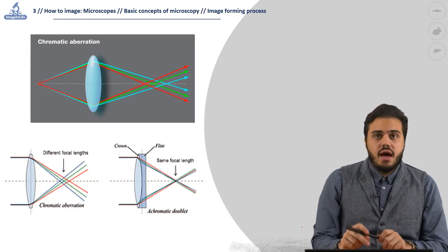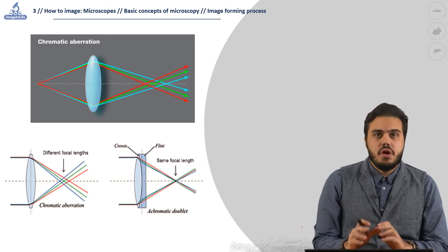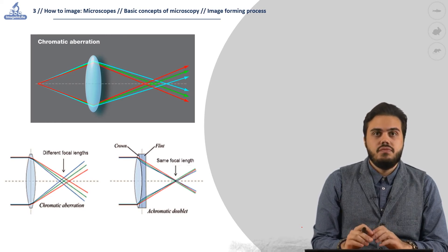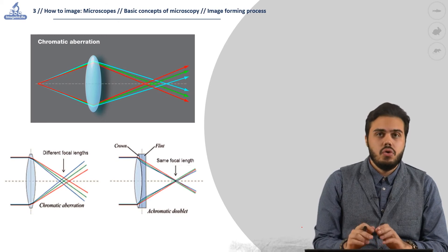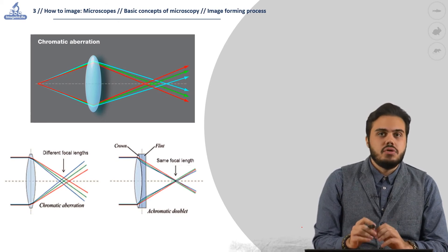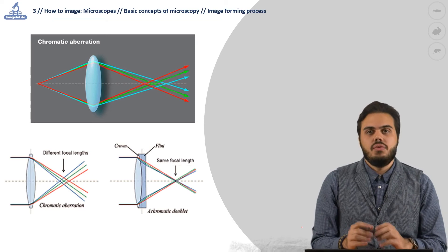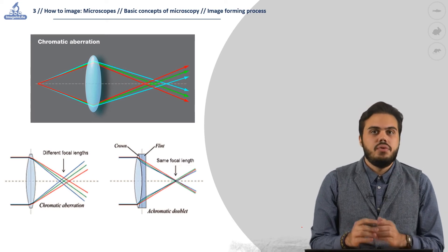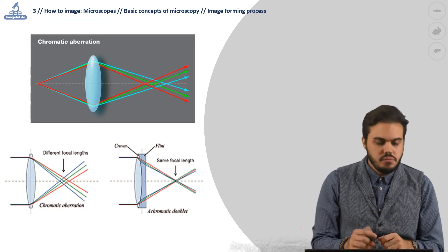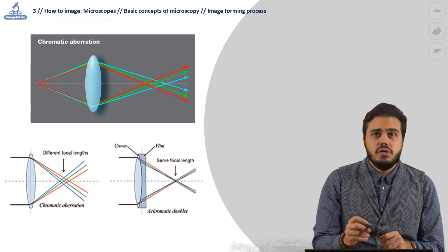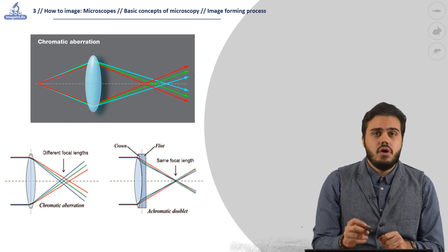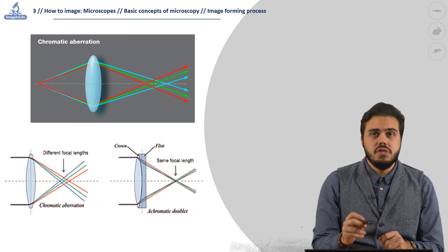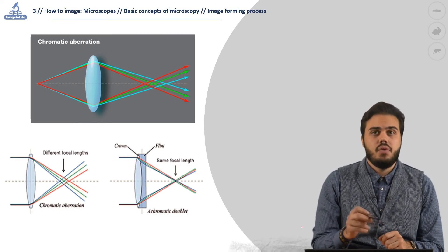The axial chromatic aberration is caused by the emerging of different focal planes for different wavelengths or colors. This happens because blue light is refracted to the greatest extent compared to the green and red light. The lateral chromatic aberration is caused by the same theory of axial aberration, but forms rings of different colors around each detail.